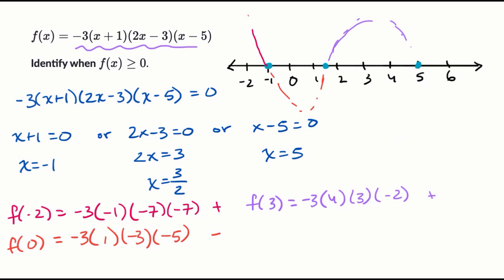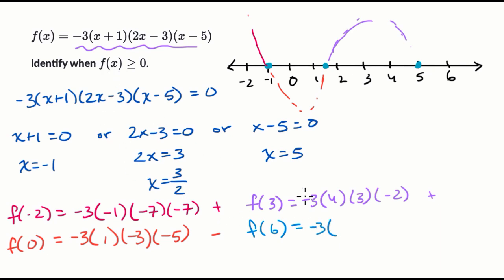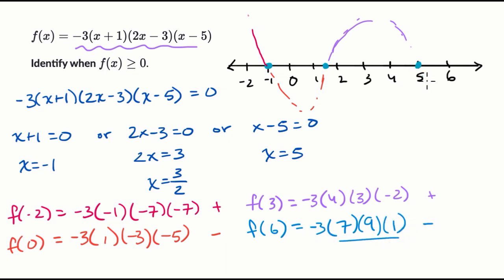Last but not least, let's think about when we are to the right of the last zero. Let's take f of six. That's going to be negative three, times seven, times two times six minus three which is nine — positive nine — times six minus five which is one. All of those are positive, but we have that negative three, so the result is negative. The function is negative over that interval and just keeps going negative.